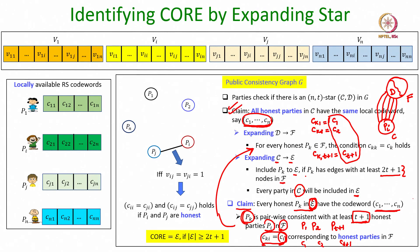We then check whether this expanded E set is of size at least 2t+1. If it is, we assign it as the core; otherwise we discard the sender as corrupt, since it has not distributed a sufficient number of common codewords.